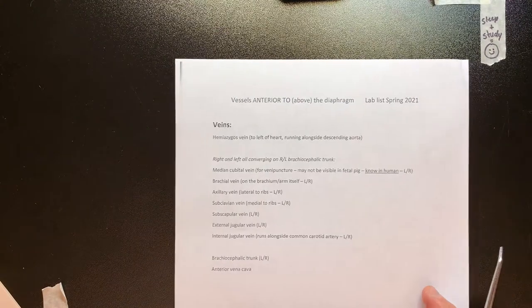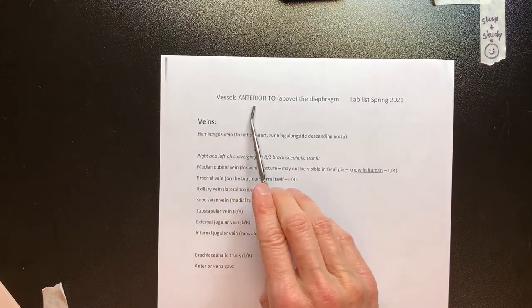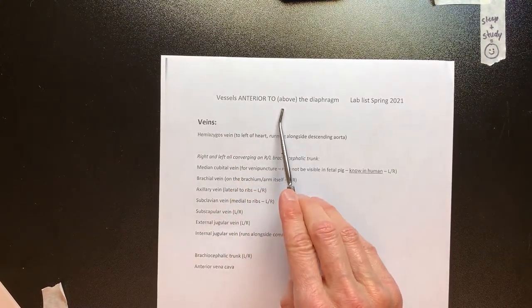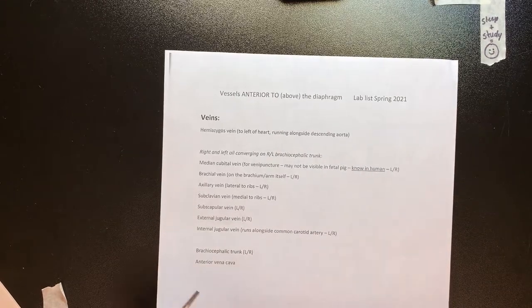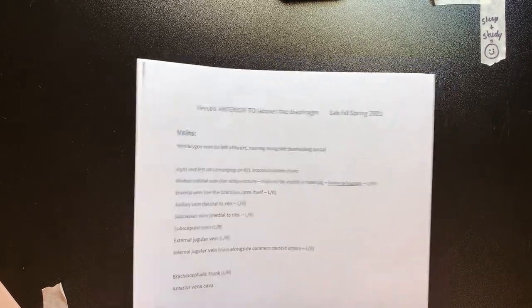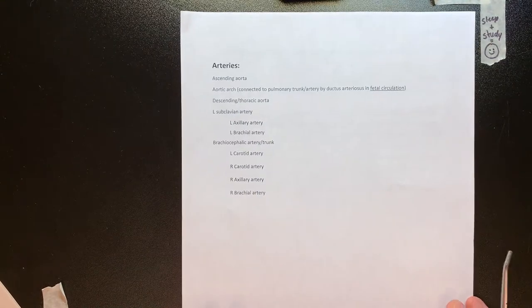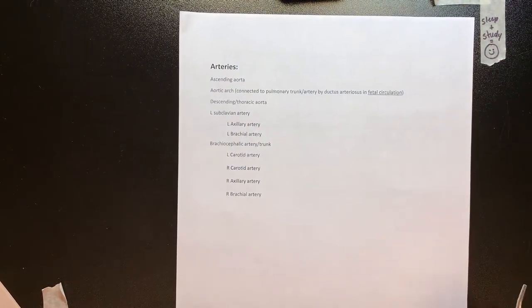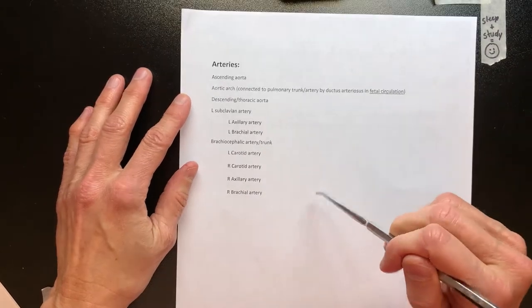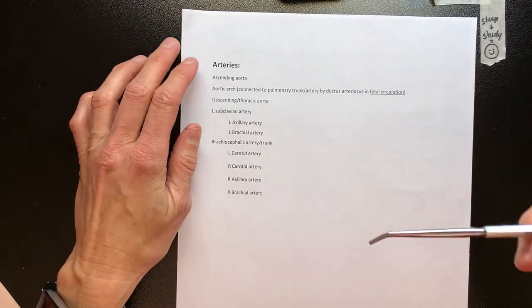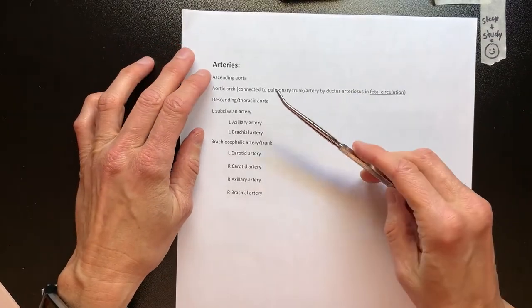Let's review the arteries that are above or anterior to the diaphragm. The list we're using covers vessels anterior to or above the diaphragm for the lab list of spring 2021. We've done the veins in another video, so now let's do the arteries. We'll be going from the heart out, because that's the direction of travel for the arteries.